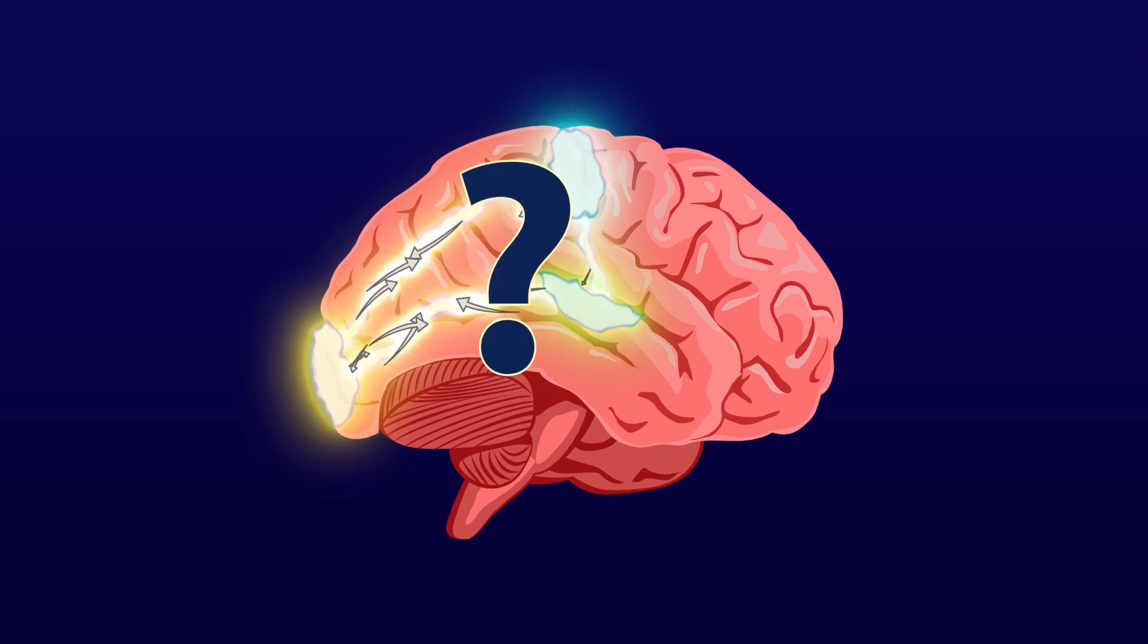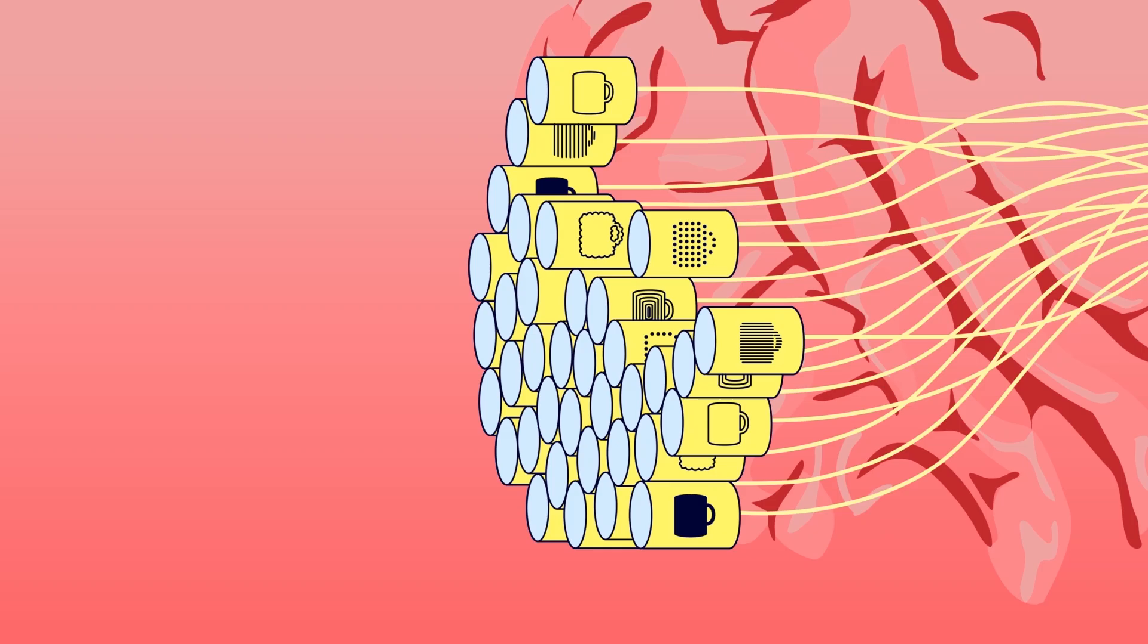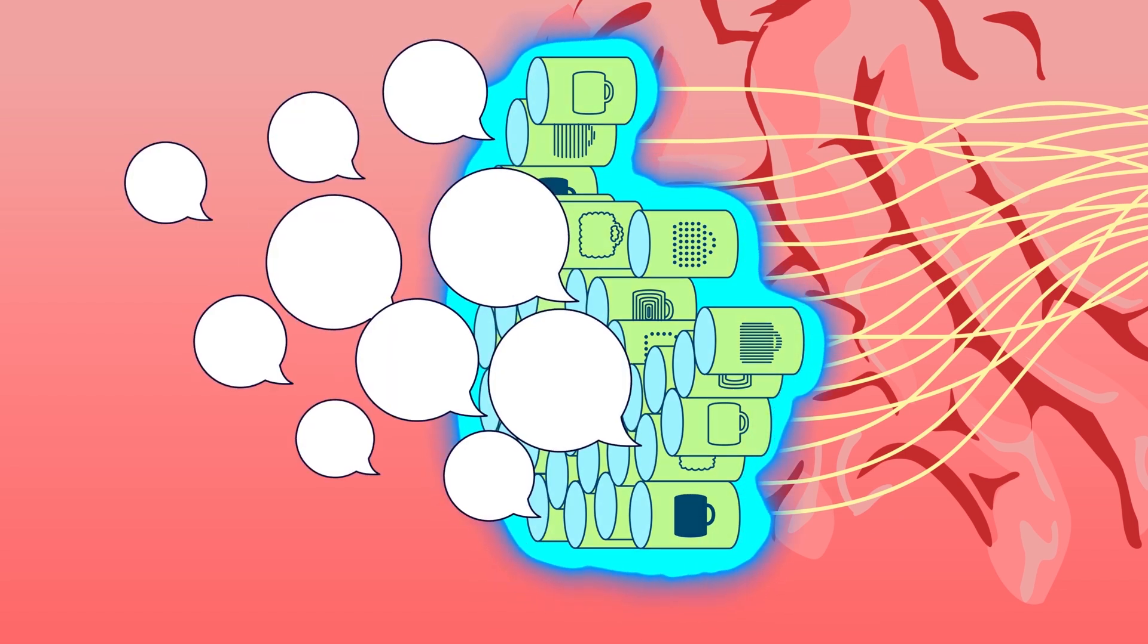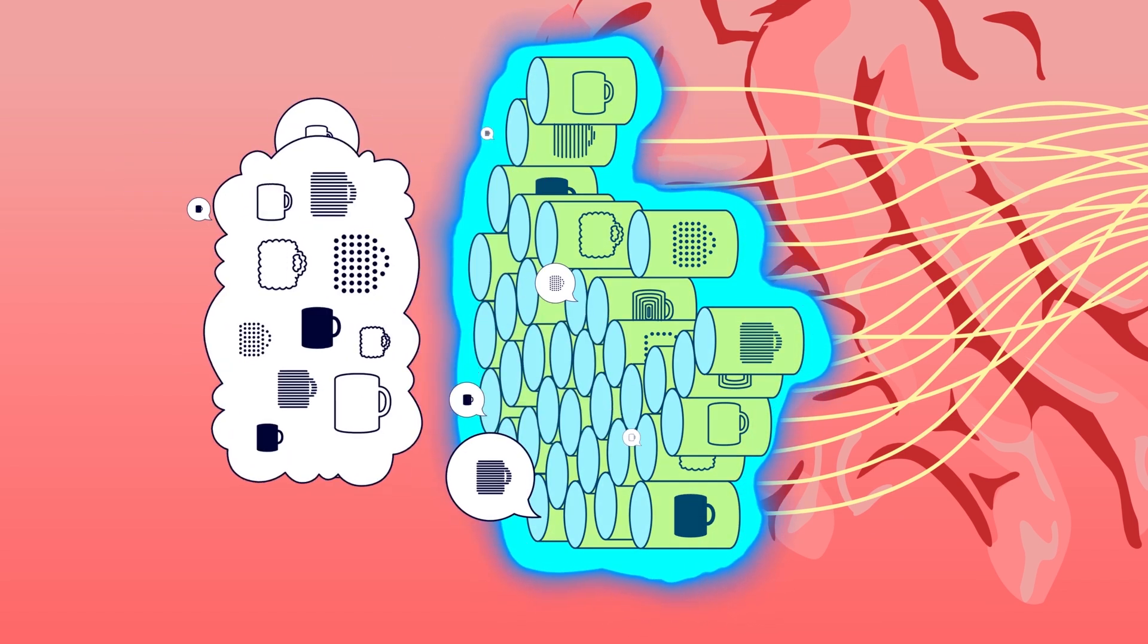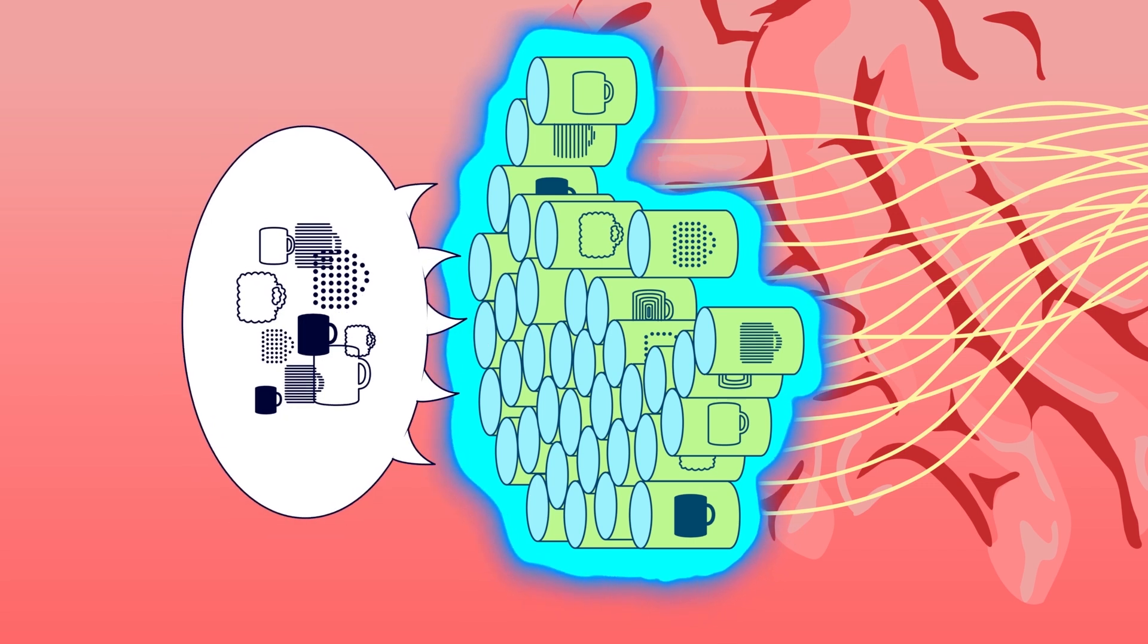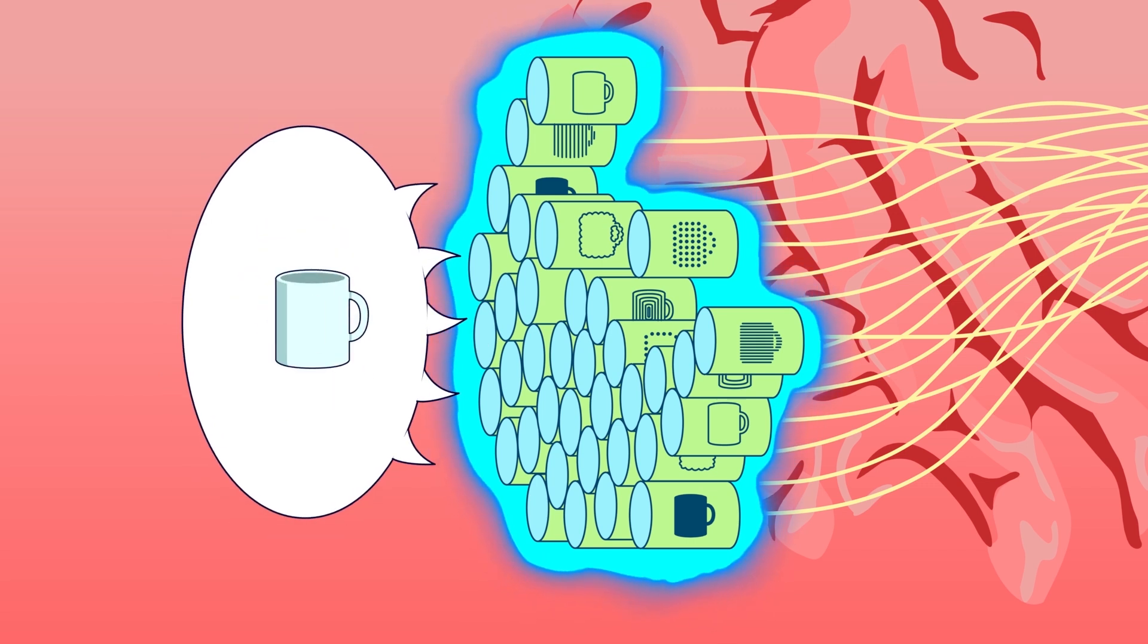What these connections do was not known. The thousand brains theory proposes that these connections allow the different models to talk to each other. In essence, they allow the different models to vote to reach a consensus, a singular perception of what we are sensing at any moment.